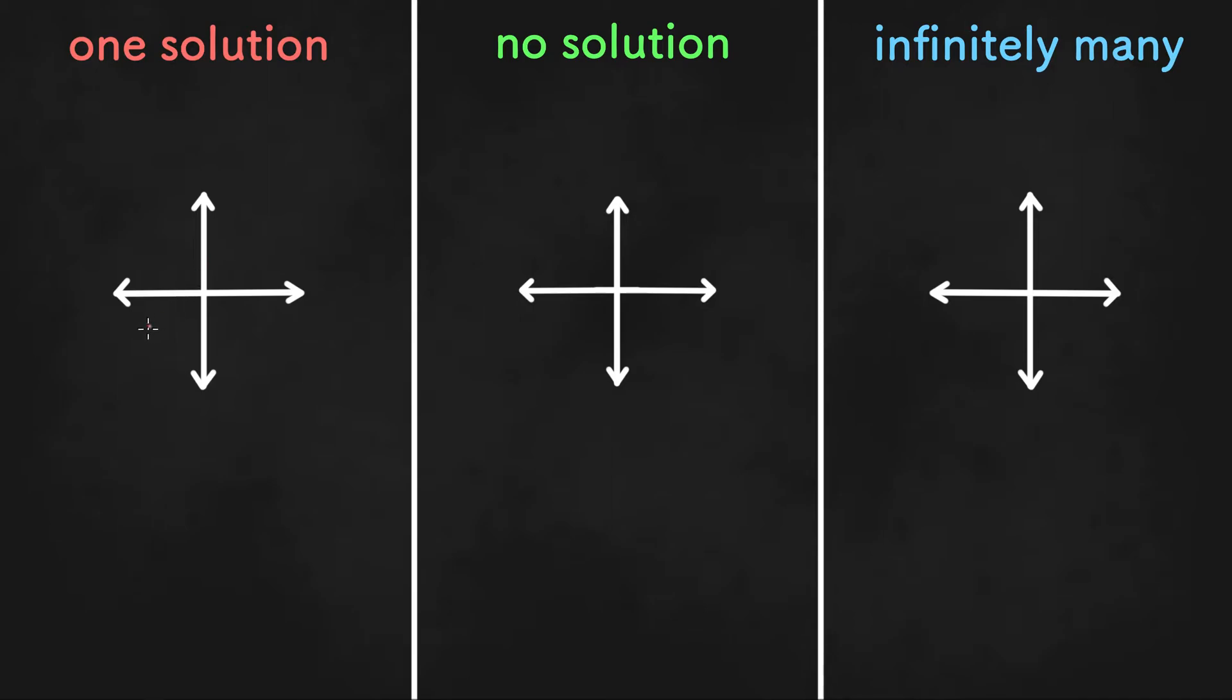When graphed, a system of equations with one solution would look like this. Two or more lines will intersect at exactly one point, hence one solution. And a system of equations that has one solution will be called a consistent system.